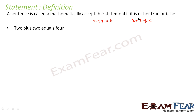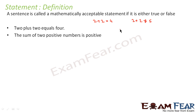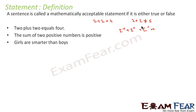A statement can be either true or false, but it has to be always true or always false. For example, 'the sum of two positive numbers is positive' — if you take one positive number and add another positive number, it will always be positive. That is a correct and always-true statement. 'Girls are smarter than boys' — this is a debatable statement.